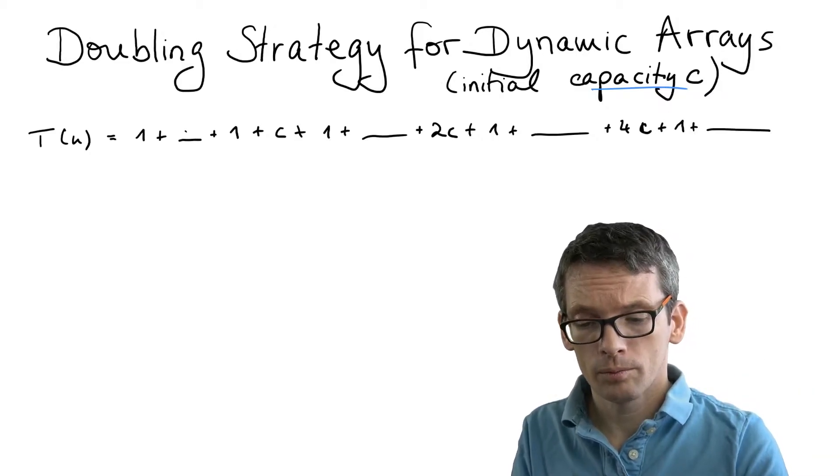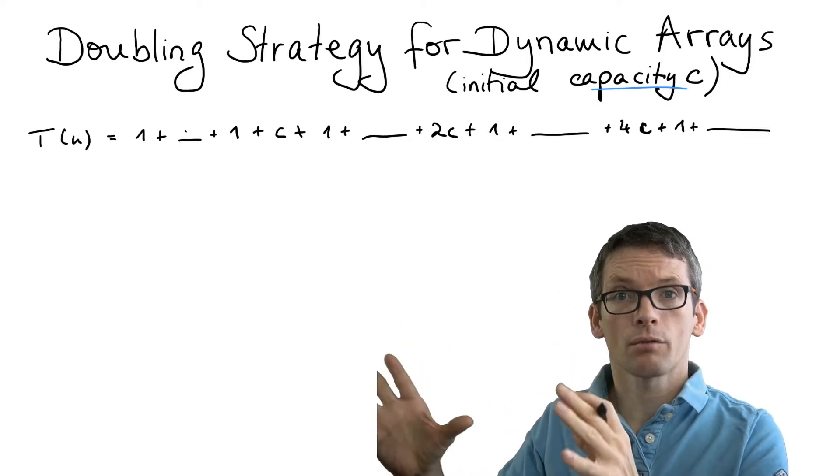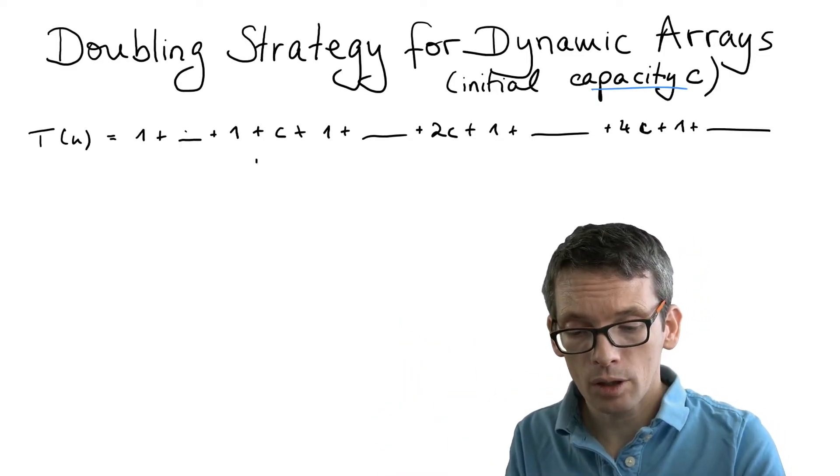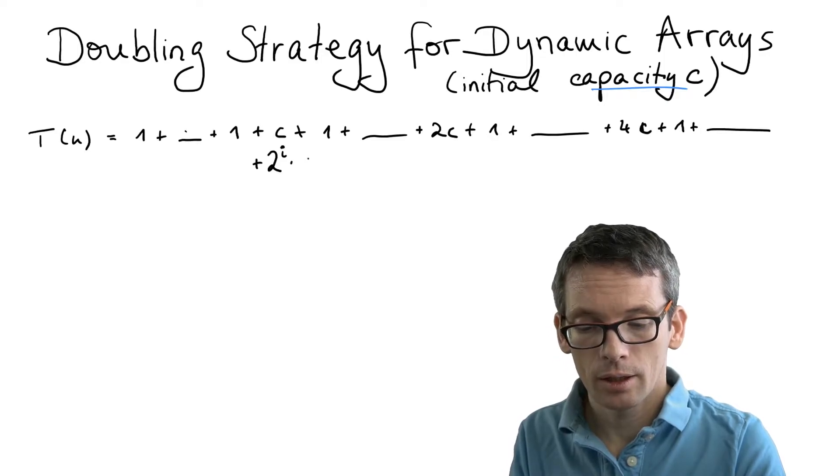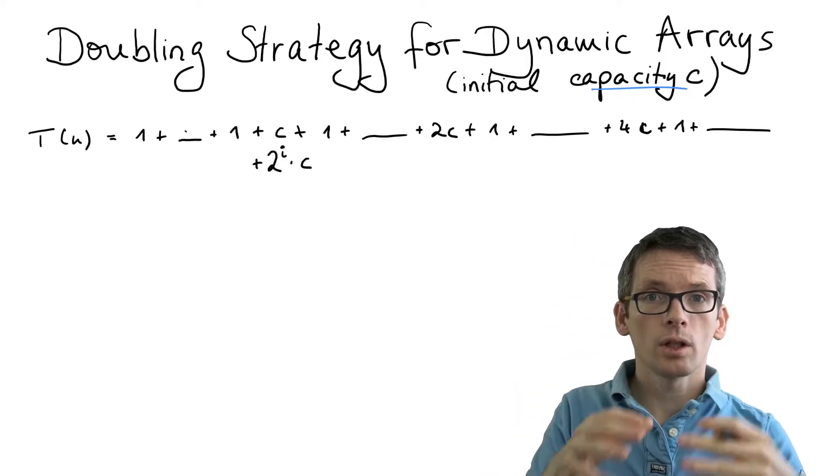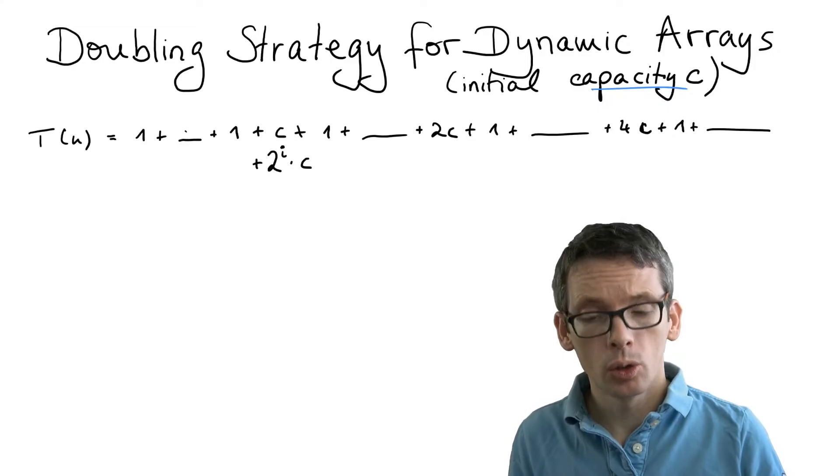The general form of these terms is we have runs, but also we have these terms of the type 2 to the i times c: c, 2c, 4c, 8c, in general 2 to the i times c.